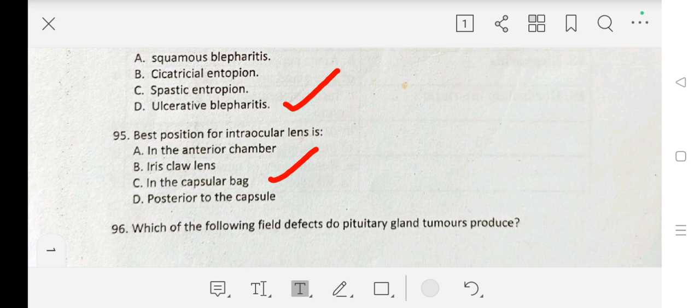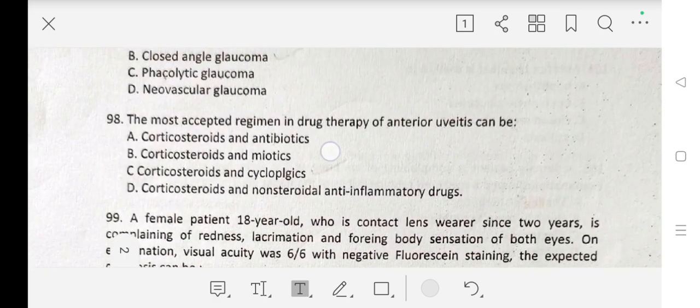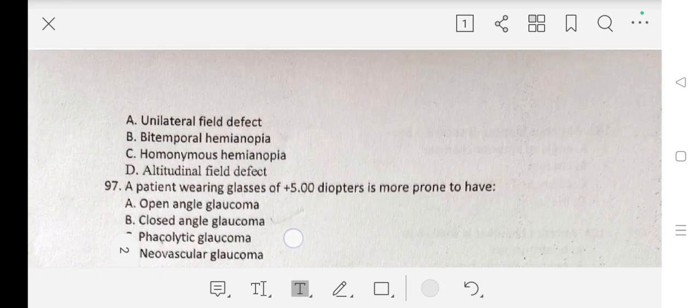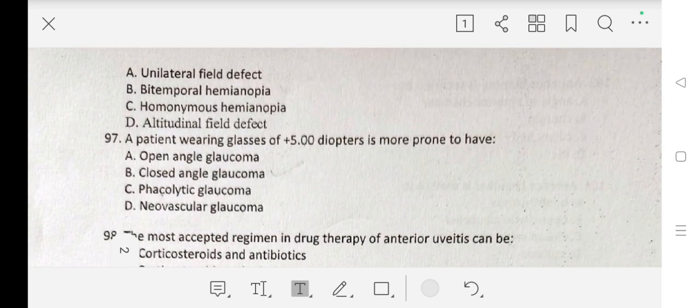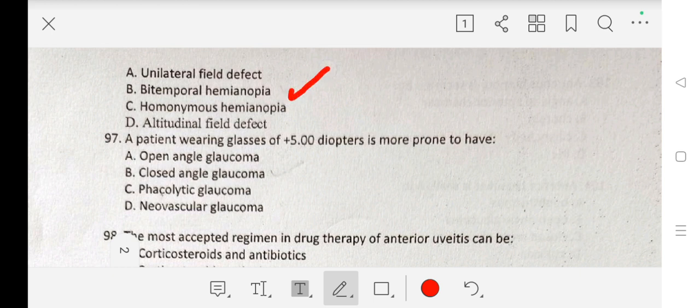Question number 96 is: Which of the following field defect do pituitary gland tumors produce? Options are A. unilateral field defect, B. bitemporal hemianopia, C. homonymous hemianopia, D. altitudinal field defect. Our correct answer is B. bitemporal hemianopia.